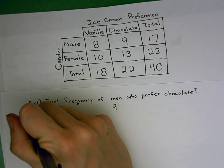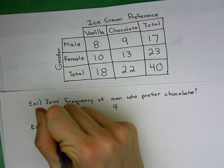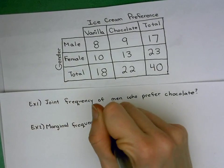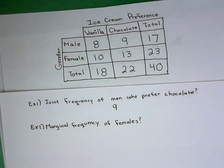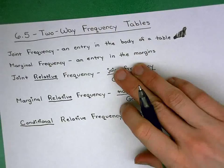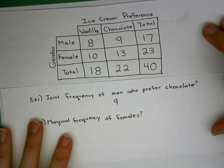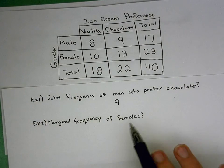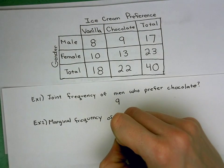To demonstrate marginal: what is the marginal frequency of females? Marginal frequency is an entry in the margins — no relative, so no fraction. Marginal is the number on the outside of the table. In this case for females, the margin is 23. So the marginal frequency is 23.